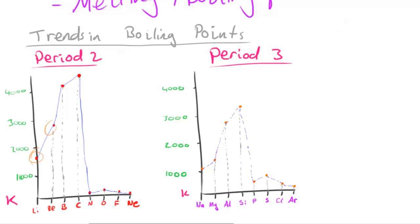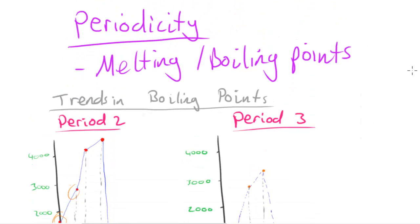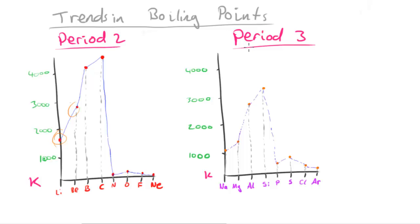In this video I'm going to be looking at the trends in melting and boiling points as one of the aspects of periodicity. What I have here are two graphs of trends in boiling points. This one is a graph of the boiling points for the different elements in period 2 when they're in their standard state or standard forms — like molecules or lattices — and same thing for this one, which is for period 3.